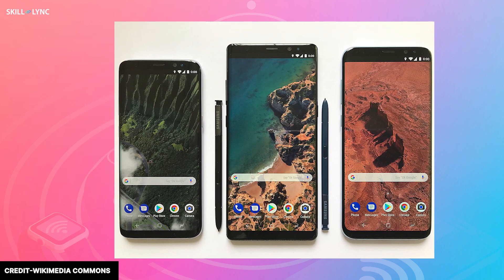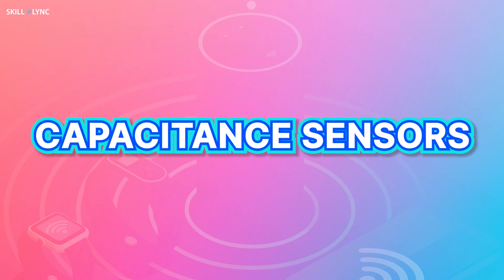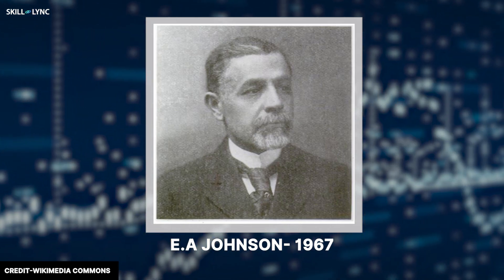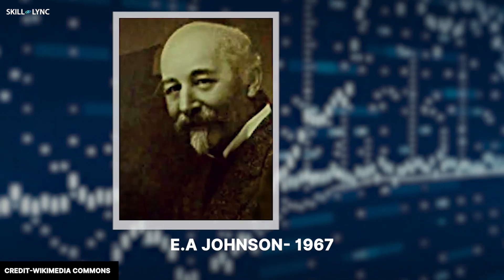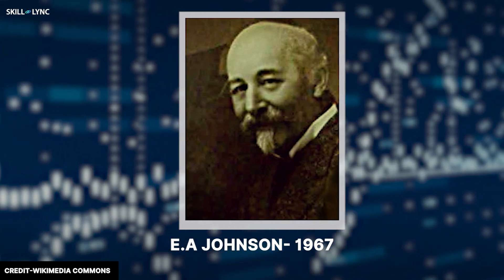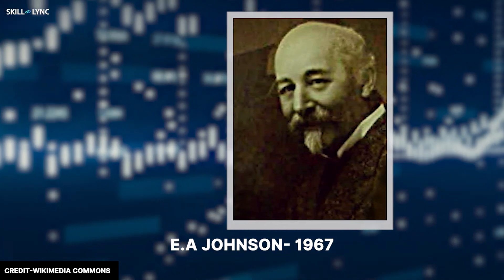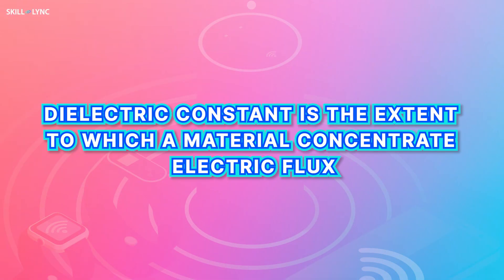This generation of new phones that enabled touchscreens was made possible by capacitance sensors. Capacitance sensors were discovered long back in 1967 by EA Johnson. A capacitance sensor is a device that can detect the presence or absence of any object that is conductive or has a dielectric constant different from air, by detecting the change of charges around it.